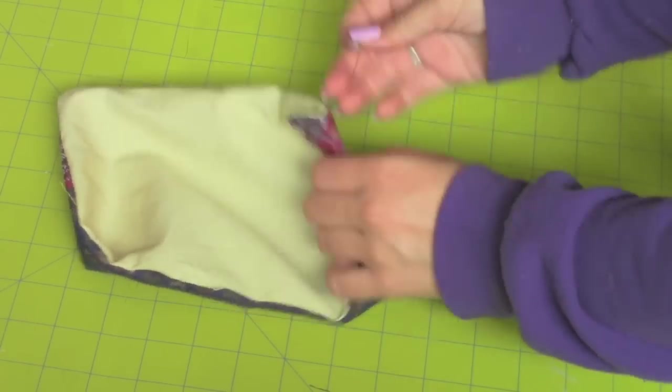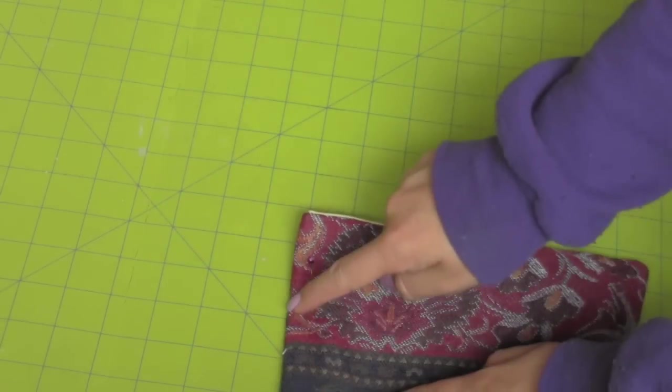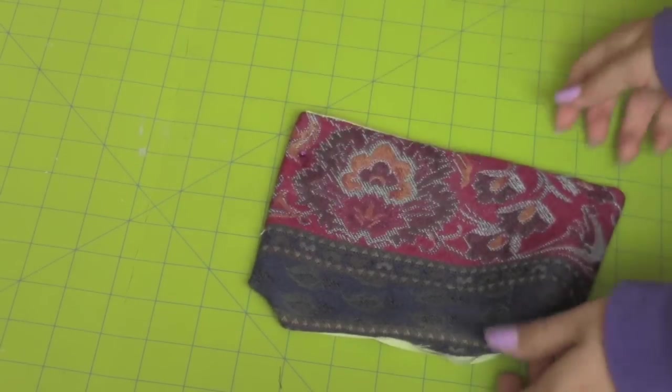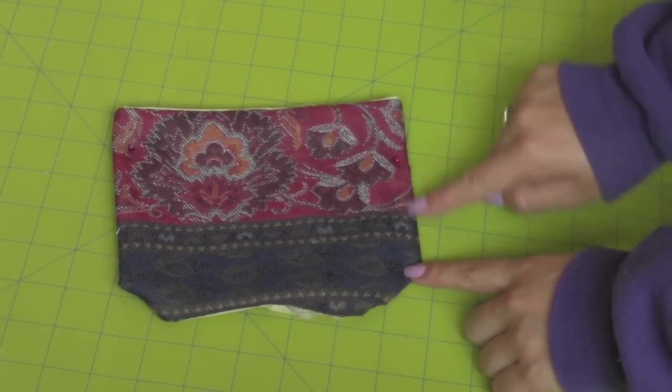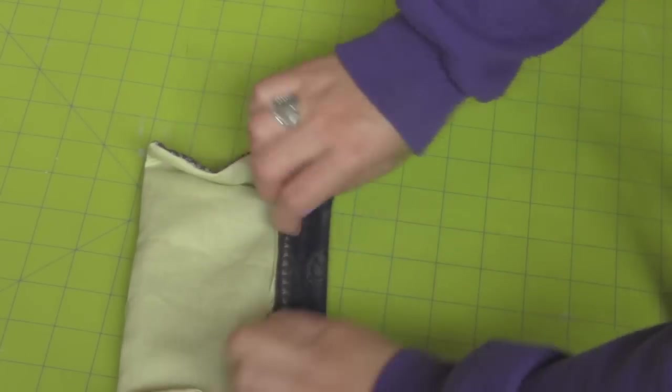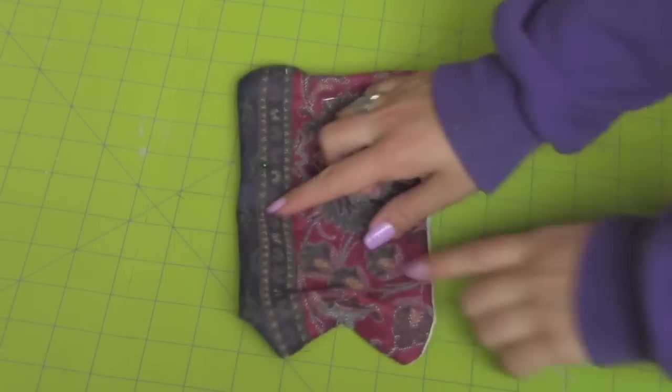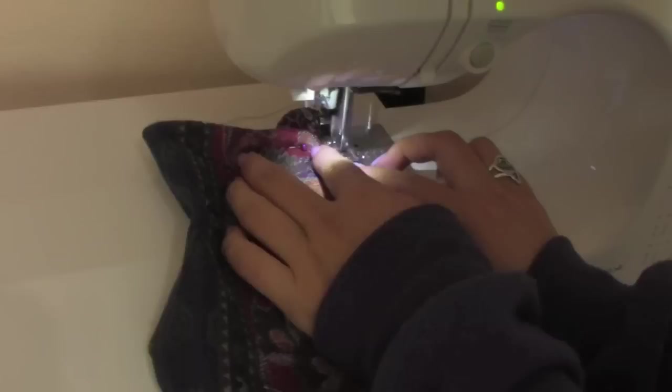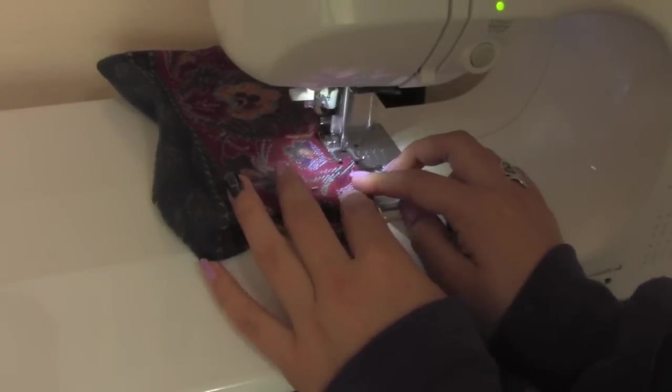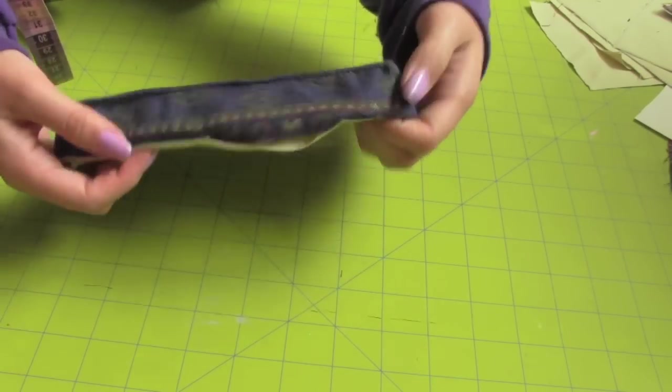Fold down both sides and sew a top stitch at the very edge. Do the same to the bottom. Sew a top stitch at the top of the pocket as well. This is what it should look like after.